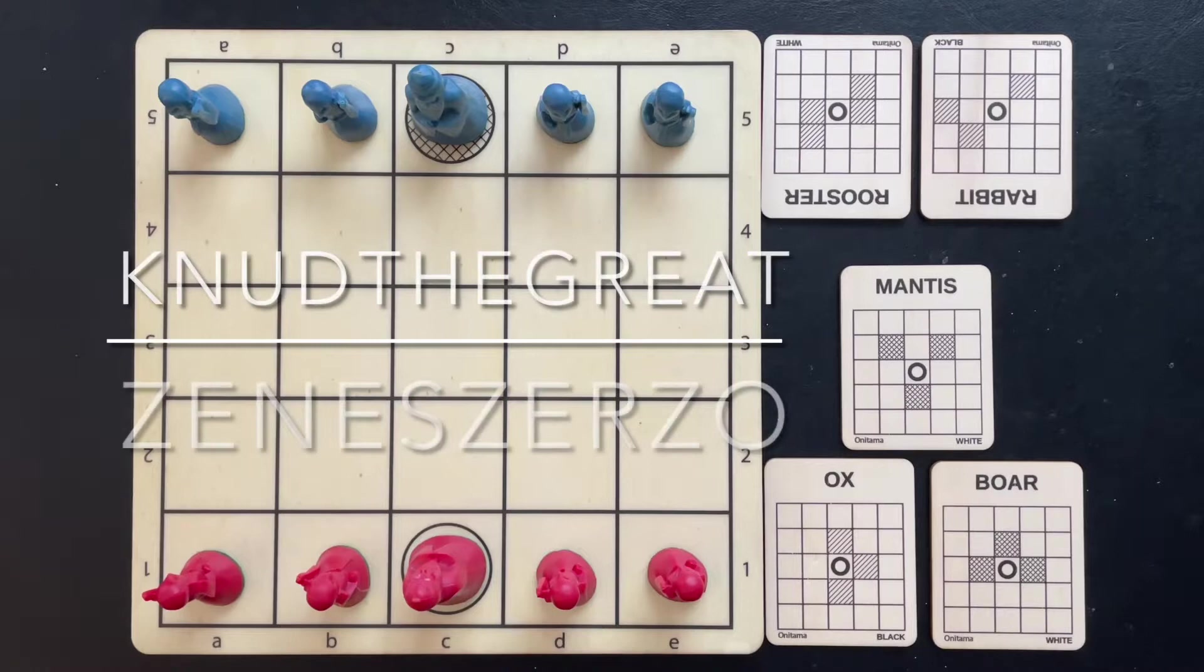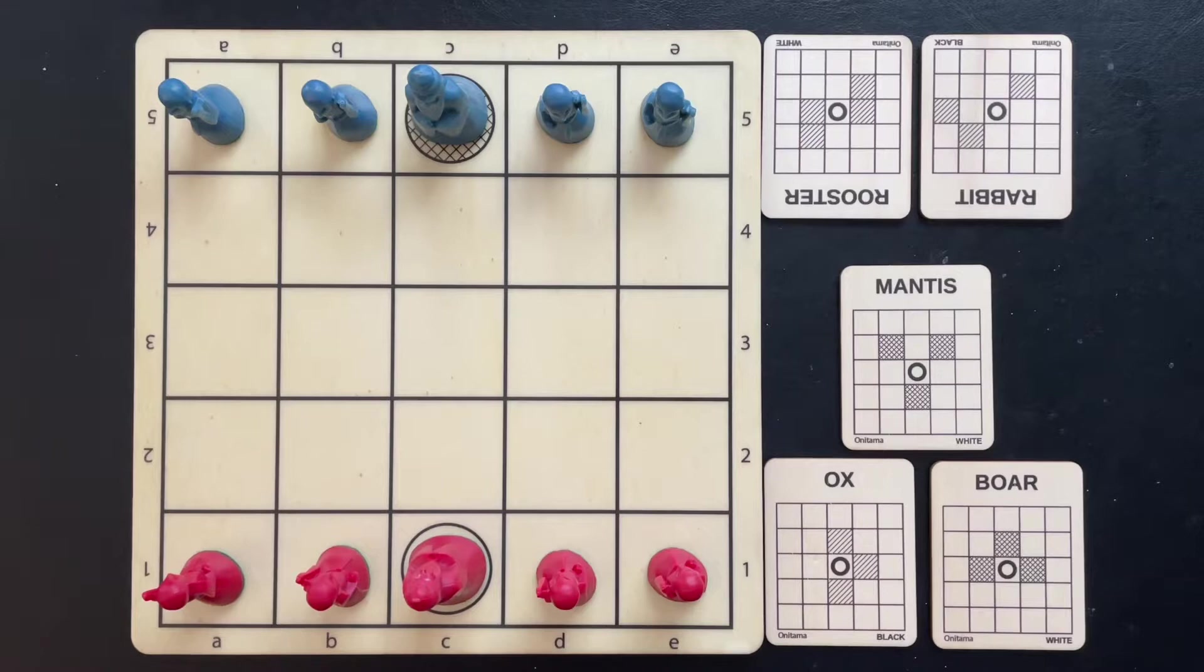There are some good matches of course but this match to me stood above all others. First of all it was played by two very good players. Zanes Zerzo here playing with the red is a top 15-20 player in BoardGameArena at the moment and Knud the Great is top 10 maybe even top five. They're both very highly rated players and as you will see in this match they both played extremely accurately. The main reason why for me this match stood above the others is because this match is truly a masterclass on how to hold on to a card done right.